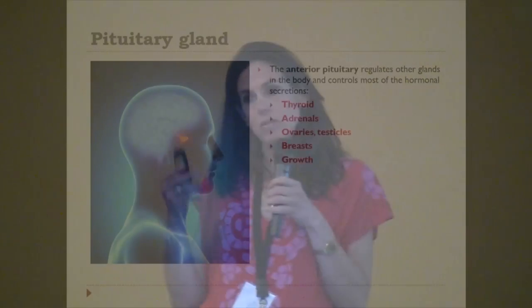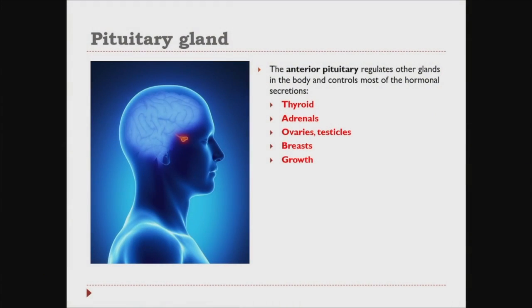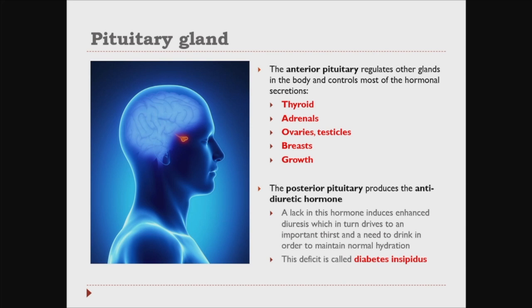The pituitary gland is a gland localized in the brain, and there are two parts: the anterior and posterior pituitary. The anterior pituitary regulates other glands in the body and controls most of the hormonal secretions from the thyroid, adrenals, ovaries, testicles, and breasts, and also produces growth hormone.